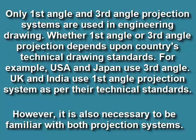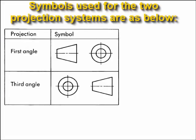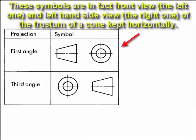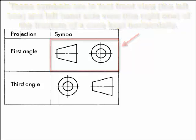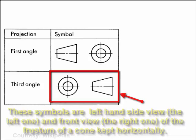It is also necessary to be familiar with both projection systems. There are symbols used for first angle and third angle projection systems, shown in the title block on the lower right corner of the drawing sheet. For the first angle projection system, the symbols are in fact the front view and the left-hand side view of the frustum of a cone kept horizontally. For the third angle, the symbols are the left-hand side view and the front view of the frustum of a cone kept horizontally. These symbols are specific to first angle and third angle and should be used in the drawing sheets.